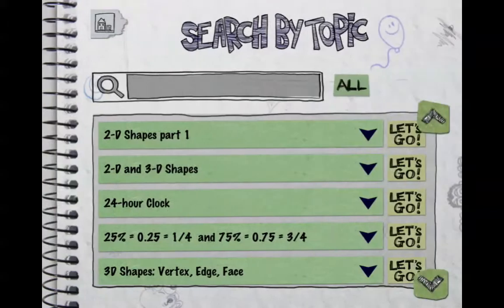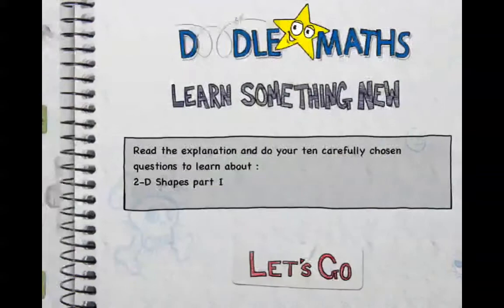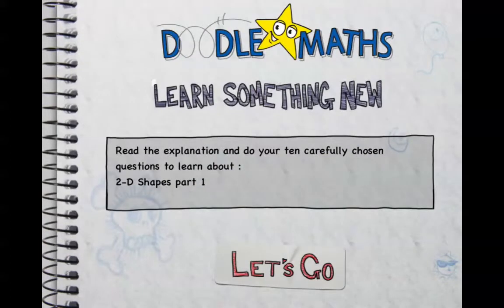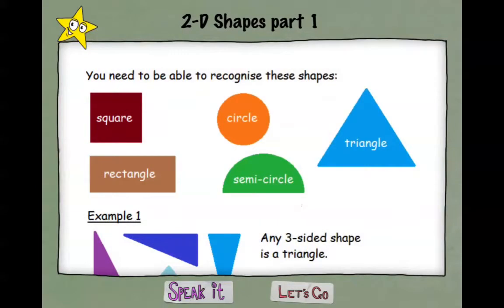When kids are learning about different topics in the topic index, all they need to do is pick which one they'd like to go to. Let's go to 2D shapes part one and it says learn something new, let's go.